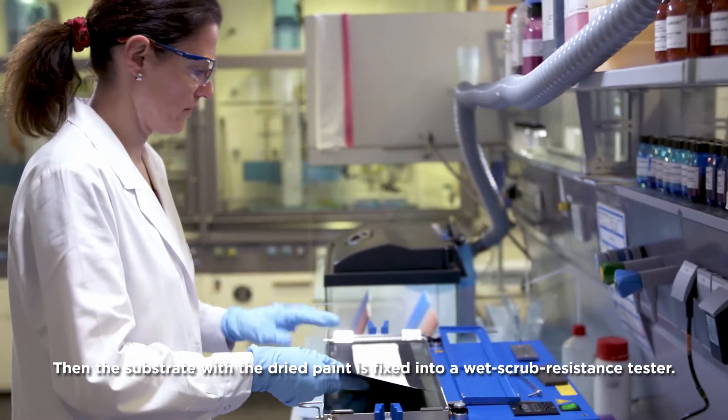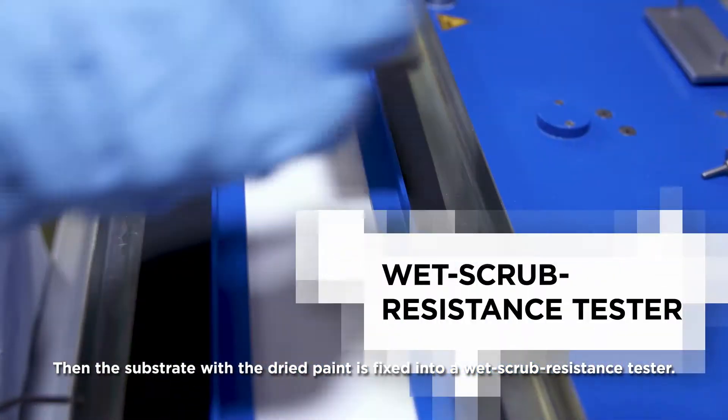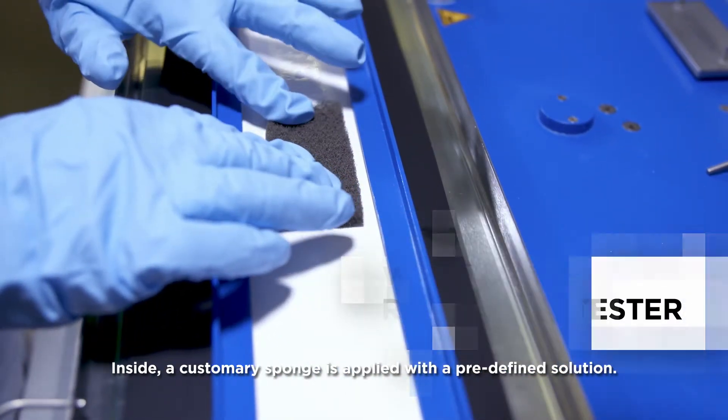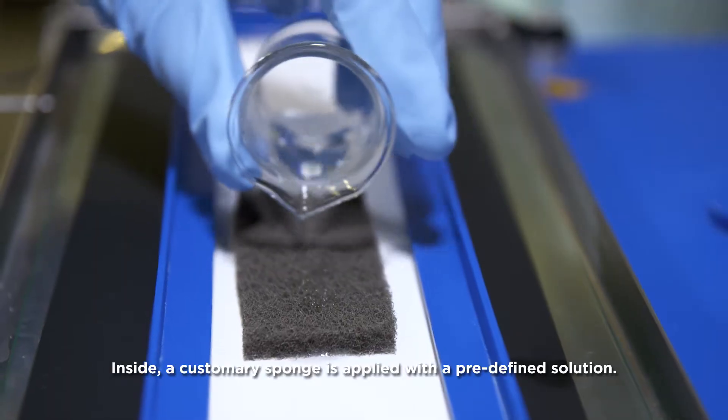Then the substrate with the dried paint is fixed into a wet scrub resistance tester. Inside, a customary sponge is applied with a predefined solution.